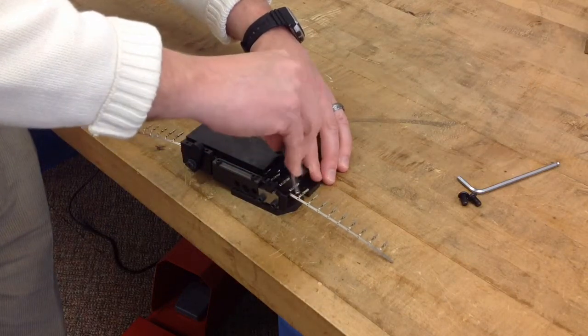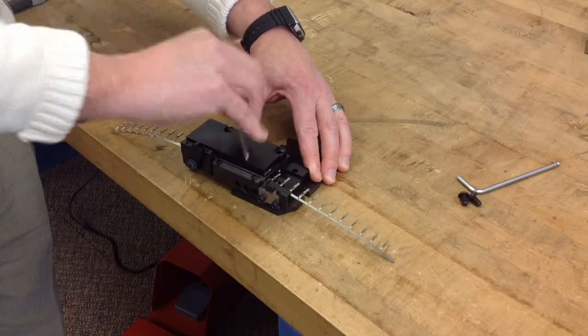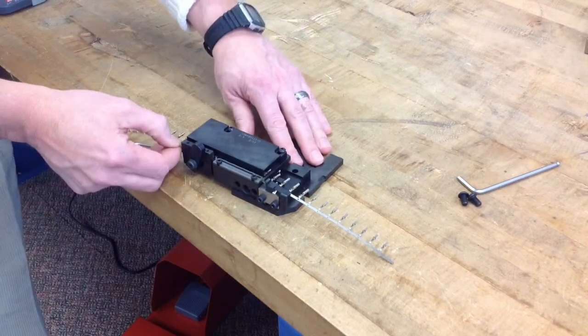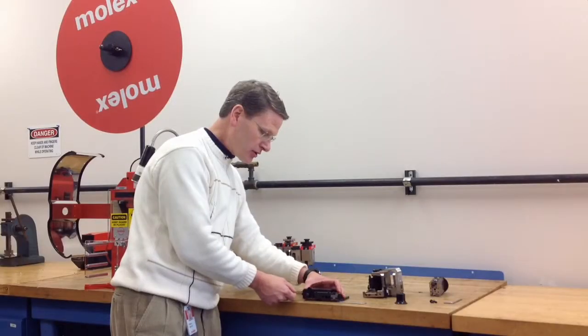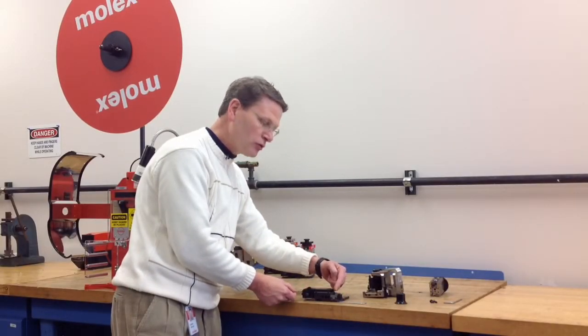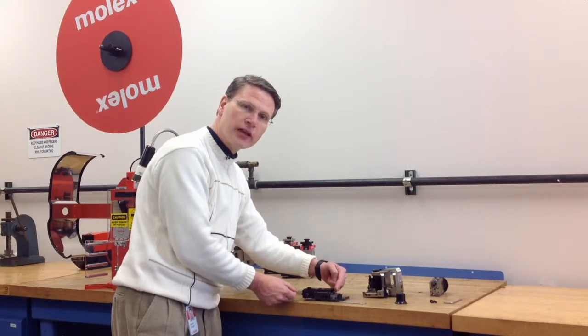And then we want to make sure that that rear cover is still tight against the terminal strip, but it still allows freedom of movement. One way to check is to jiggle the terminals on one end and you shouldn't see them move over the tooling or over the anvils.